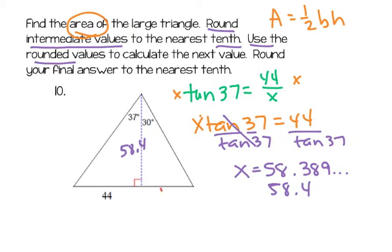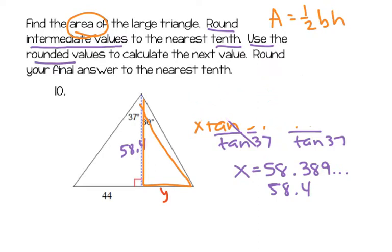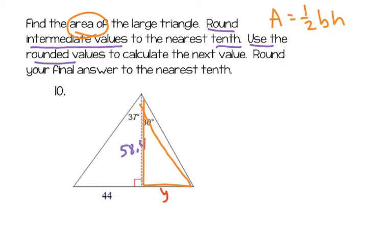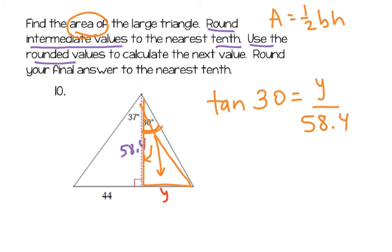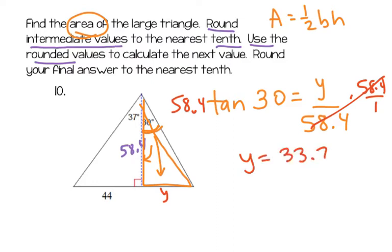Now the next thing I need is this other piece. Let's concentrate on the second triangle. I've got the 30 degrees, and I've got the side opposite and the side adjacent — so again, tangent. This time it will be tangent 30 degrees, and the side opposite is y over adjacent is 58.4. To solve that for y, I multiply both sides by 58.4. Typing into the calculator 58.4 times tangent 30, I get 33.7 — so y equals 33.7.